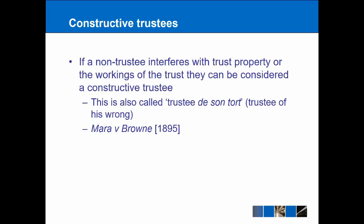Finally, we can also talk about constructive trustees. Someone might actually become a constructive trustee without really knowing about it. In most examples, this is where someone is a trustee, solicitor, or company director, so the fiduciary relationship is obvious. But someone can also become a constructive trustee if they interfere with trust property or the workings of the trust to such an extent that they can be considered a constructive trustee — a completely random person getting involved and acting like a trustee. If they do, they can be considered a 'trustee de son tort', which means trustee of his wrong. The constructive trust will arise even though the person is not a formal trustee, because there is still that fiduciary relationship — and the case to use for this is Mara v Browne.